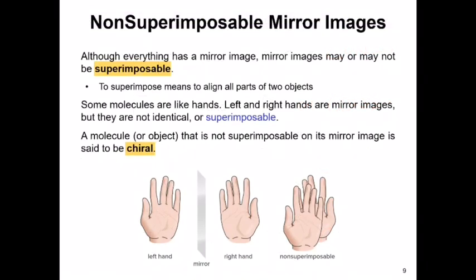Everything has a mirror image, and mirror images may or may not be superimposable. To superimpose means to align all parts of two objects. Look at your hands — your right hand is a mirror image of your left hand, but when you put one on top of the other, all the parts don't line up. A molecule or object that is not superimposable on its mirror image is said to be chiral. Mirror images that are superimposable are said to be achiral, like a pair of socks.